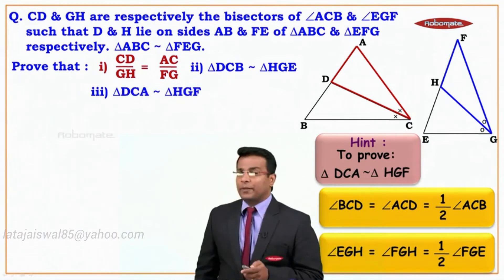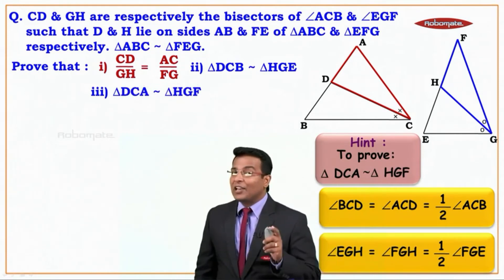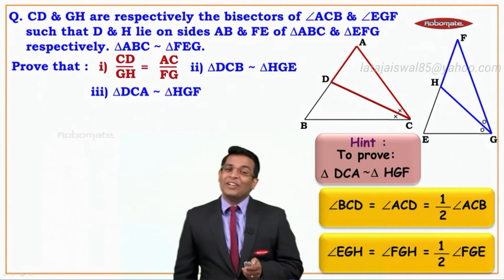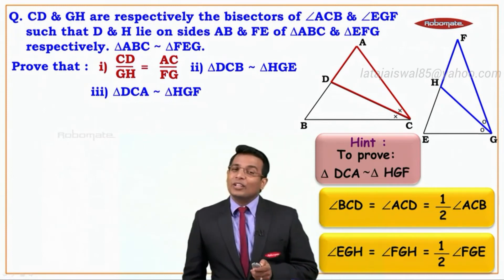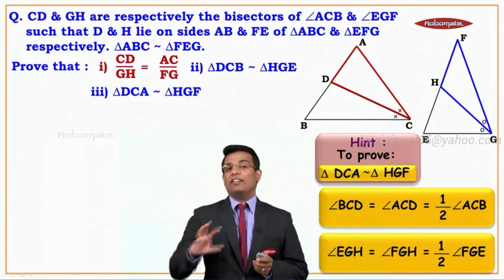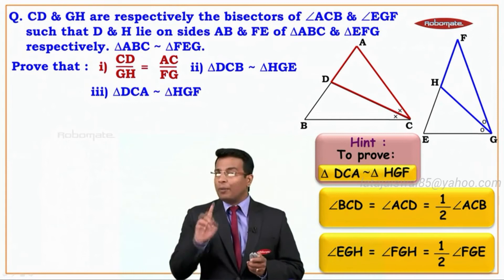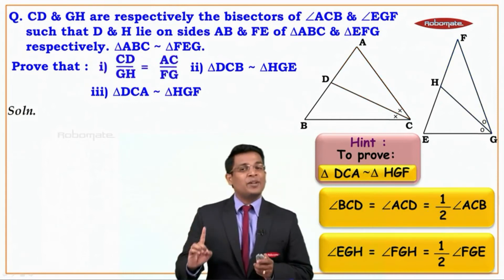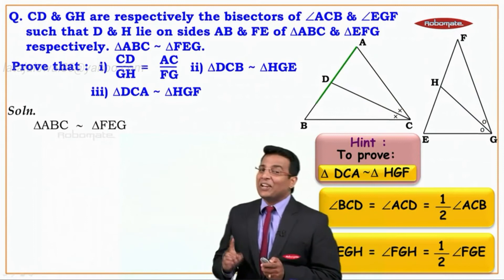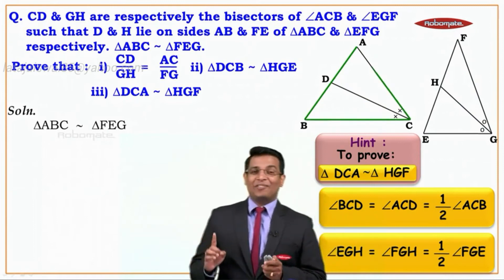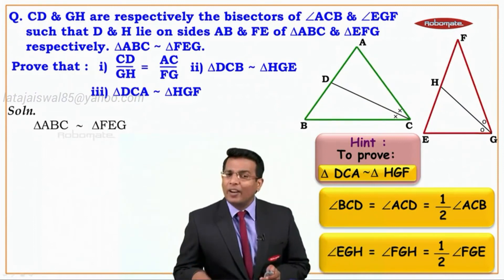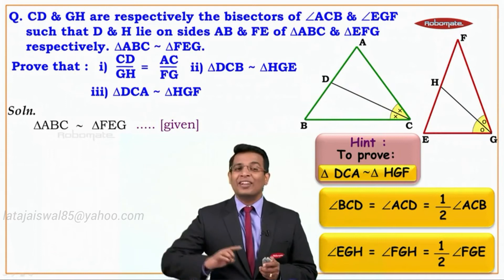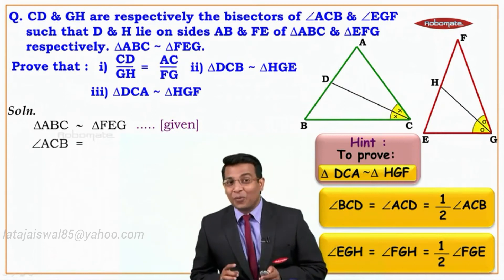We want these two triangles to be similar, and once we get that, we also get the third part of the two proofs. Now for that we are going to use the given information. Triangle ABC is similar to triangle FEG, so what can we say about angle C and angle G? Those two angles will be equal, because they are the corresponding angles of similar triangles.